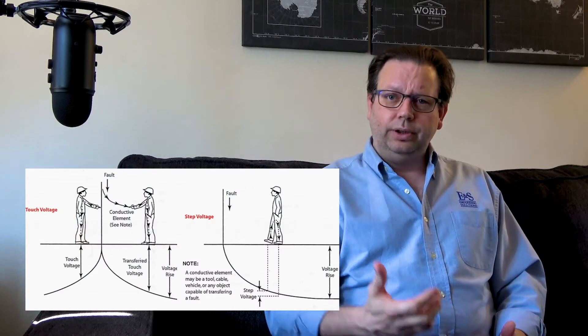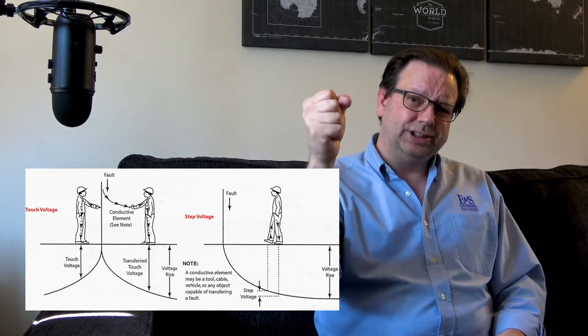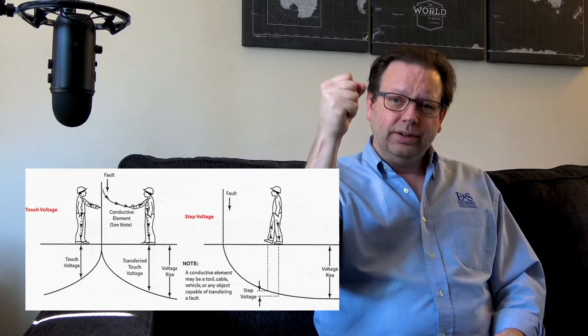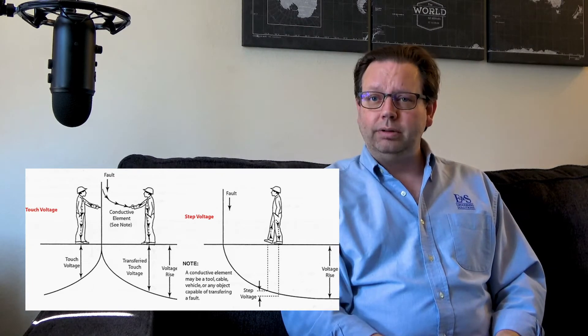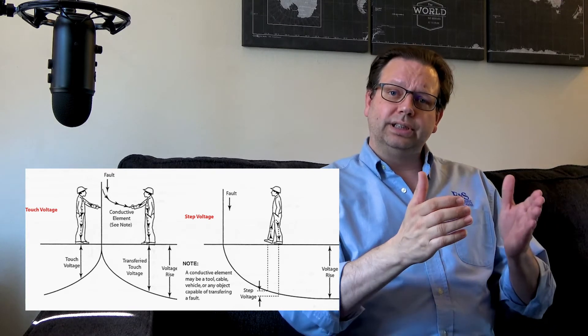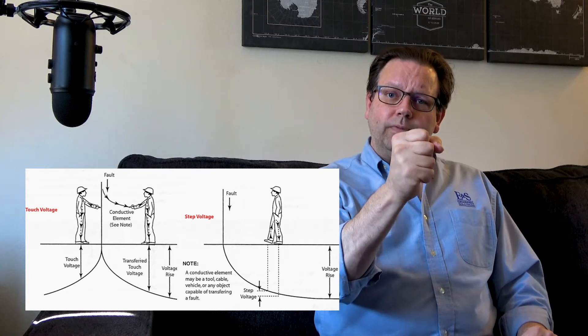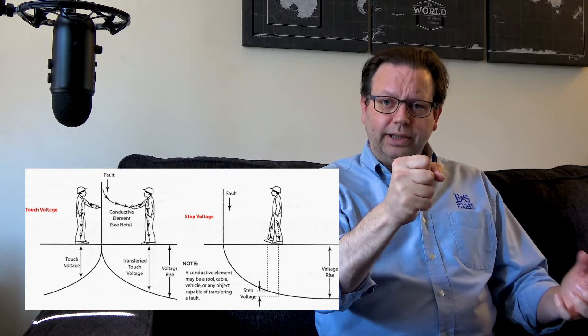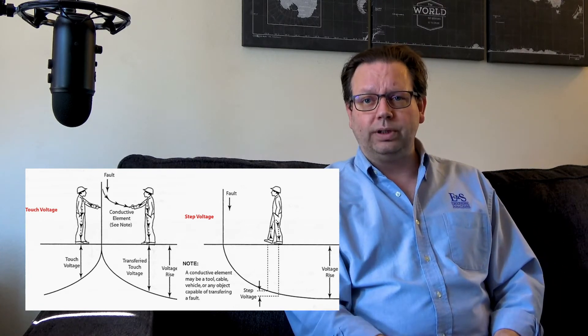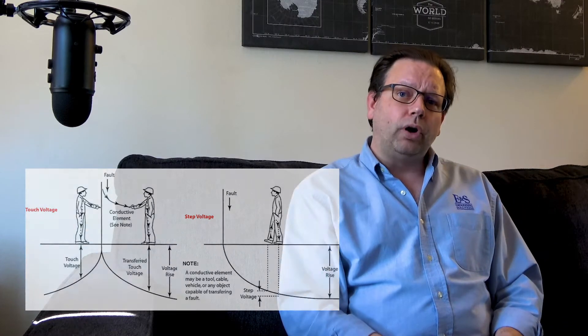The other voltage that can kill you is if you happen to be touching this tower when this occurs. The difference between your hand and your feet can be enough to kill you. If your hand's at 1,000 volts but your feet are at near zero, that's a 1,000-volt differential traveling right through your heart, and that causes fibrillation currents to occur. That's what we call touch voltages, and that can be very dangerous, more dangerous, typically, than step voltages are.